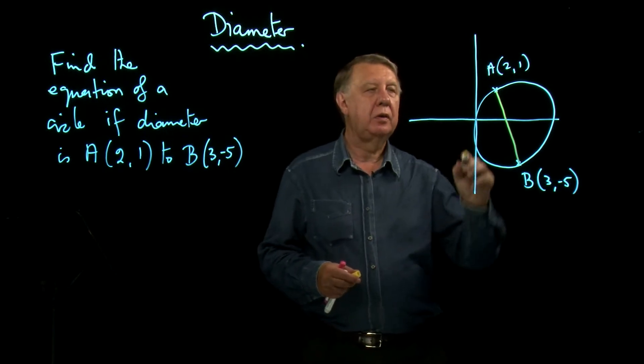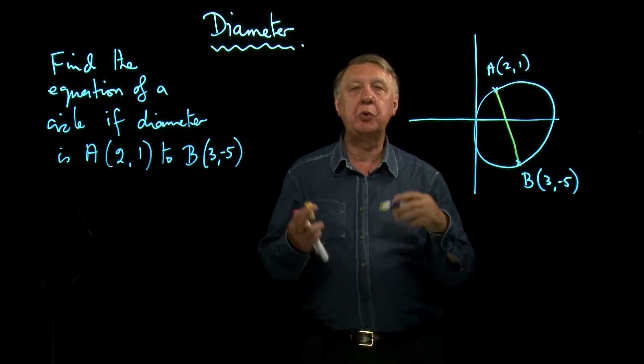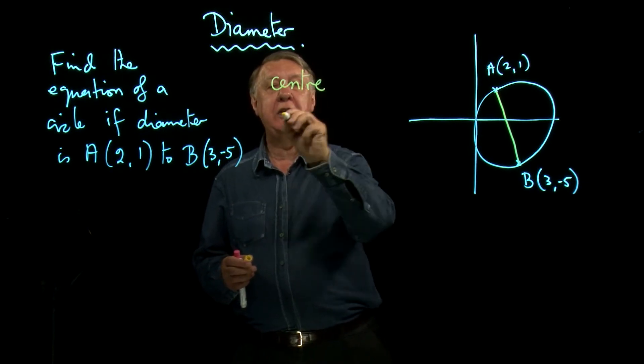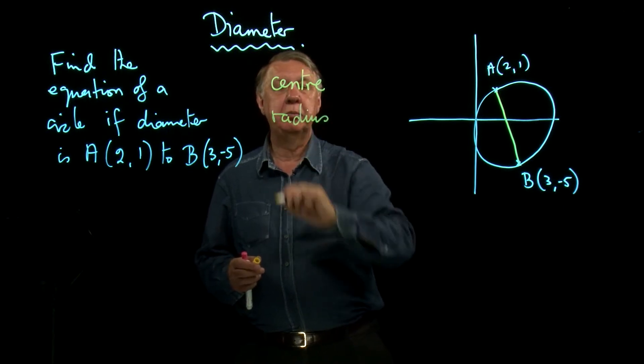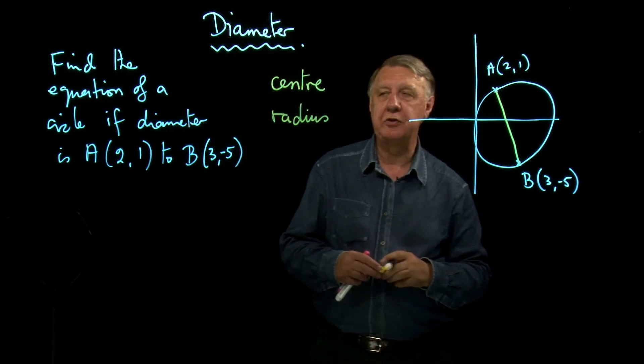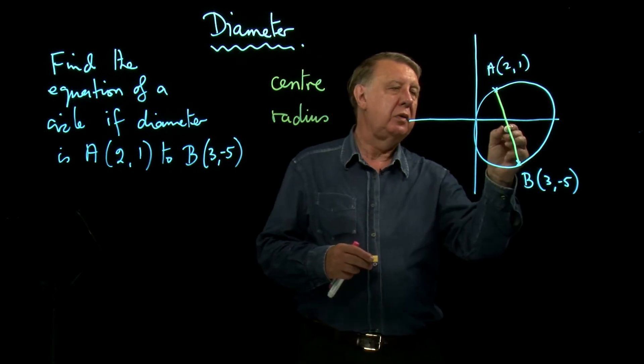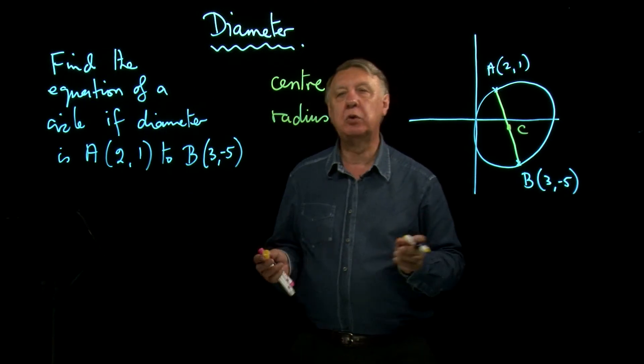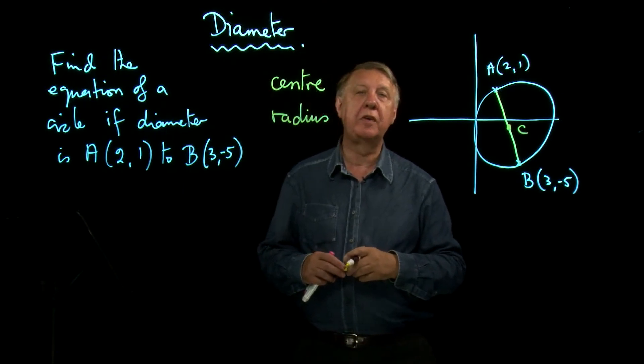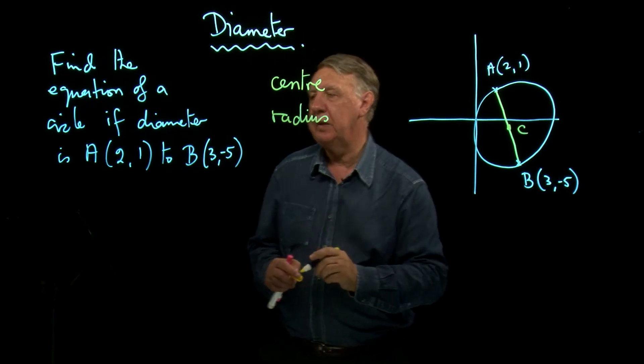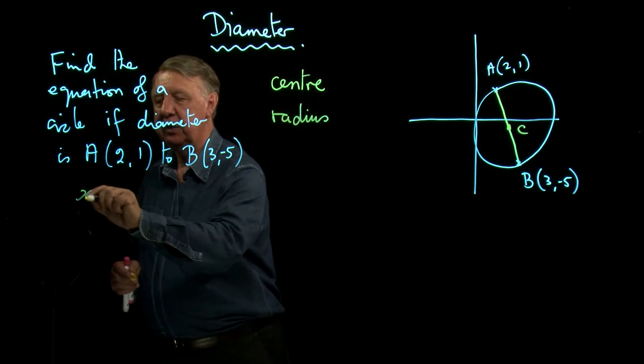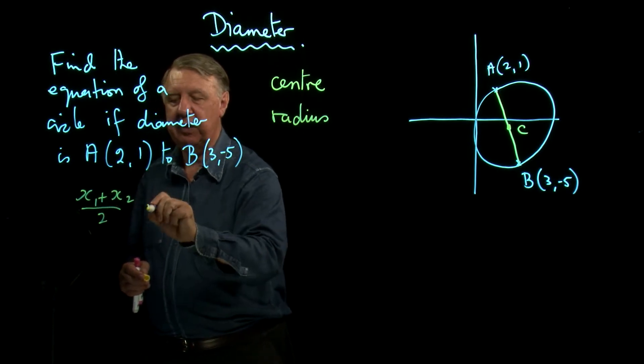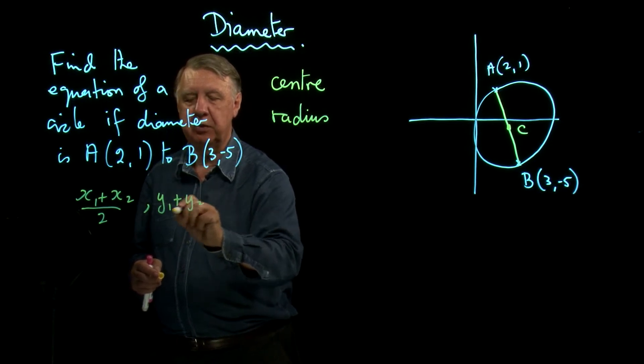So in order to find the equation of this circle what do I need? I need to know the center and I need to know the radius and then I can use my formula for the equation of a circle. So the center somewhere here. The center of course is at the middle of the diameter, the midpoint. And I've got a formula for midpoint. Do you remember that one? X1 plus X2 over 2. Remember you add the X values. Y1 plus Y2 over 2.